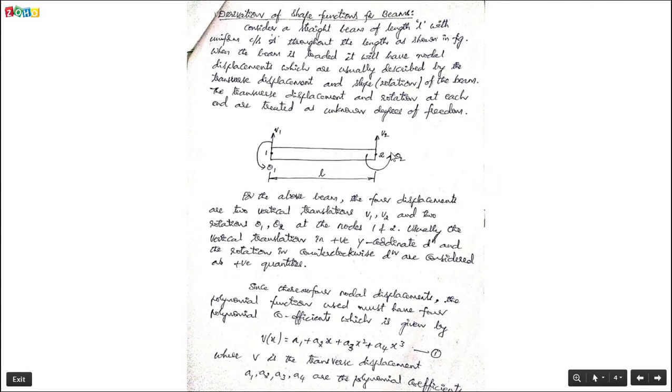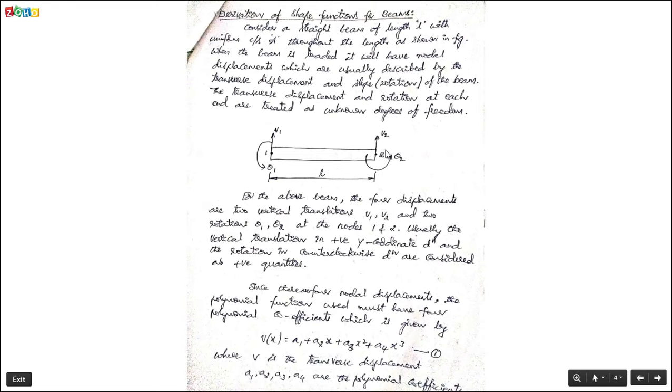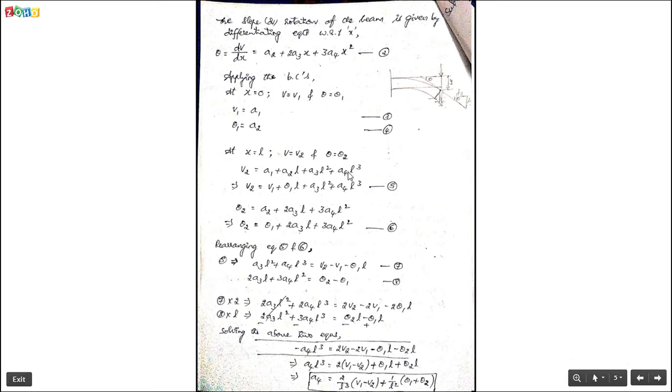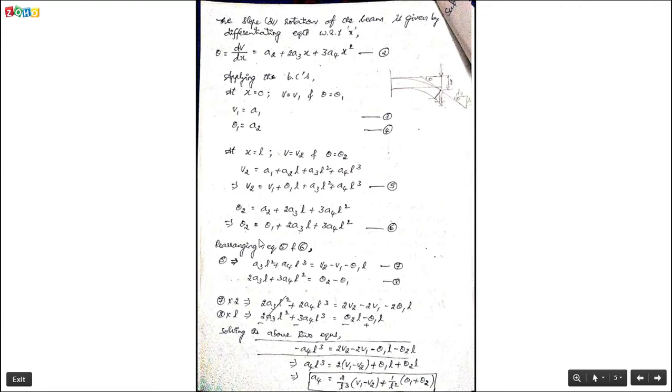Now applying boundary conditions at x = L (the final end of the beam): V = V2 and θ = θ2. Substituting x = L into the displacement equation: V2 = A1 + A2·L + A3·L² + A4·L³, which is V2 = V1 + θ1·L + A3·L² + A4·L³. For the slope at x = L: θ2 = A2 + 2A3·L + 3A4·L² = θ1 + 2A3·L + 3A4·L².